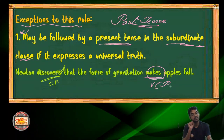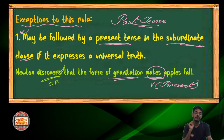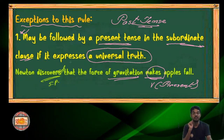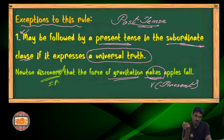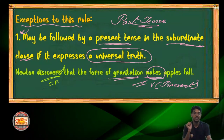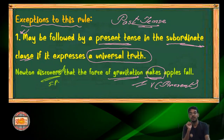Here the verb is in present. But why? It's because 'the force of gravitation makes apples fall' is a universal truth. Whenever you present a universal truth in the subordinate clause, it doesn't matter whether the principal clause is past, present, or future — it would always be in simple present form. That's exception number one.